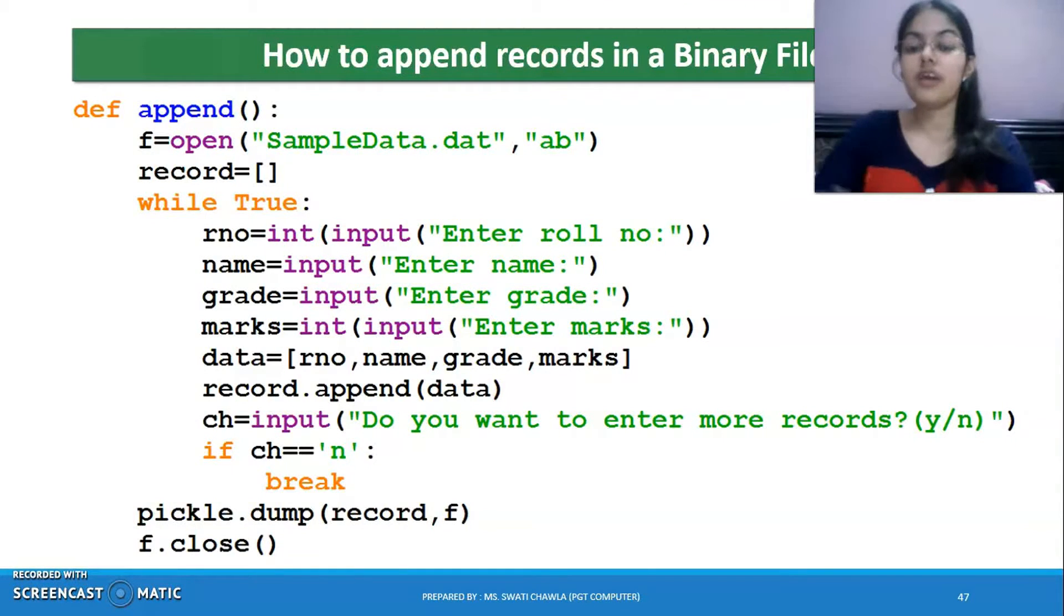Suppose if I open my file in write mode, I have three records entered. Now when I execute it a second time and enter five records, then the previous three will be overwritten. It will overwrite the entire data.